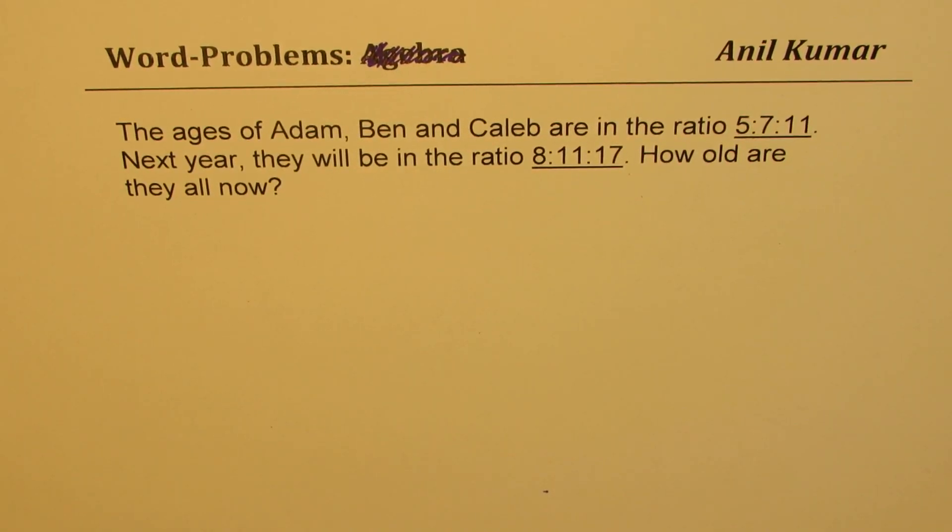I am Anil Kumar sharing with you an excellent question from my subscriber based on ratios. The question here is: the ages of Adam, Ben and Caleb are in the ratio 5:7:11. Next year they will be in the ratio 8:11:17. How old are they now?